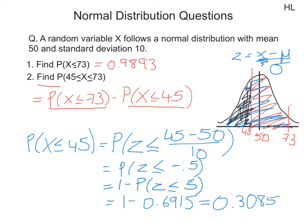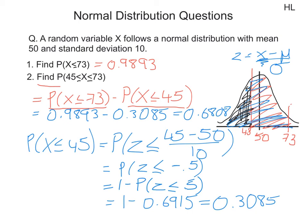Going back to our question, the probability of x being less than or equal to 73 is 0.9893, minus the probability of x being less than or equal to 45, which is 0.3085. This gives us a value of 0.6808. We can also state from this that 68.08% of the data lies between 45 and 73.